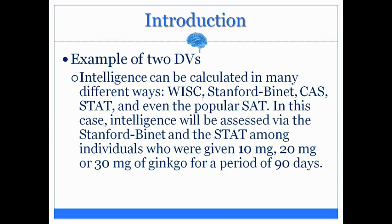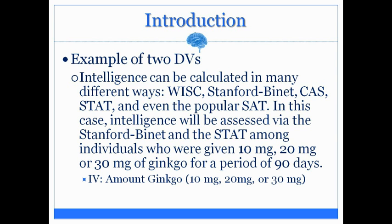The independent variable here is what the researchers are manipulating — the amount of ginkgo provided. Some individuals receive 10 milligrams, some receive 20, some receive 30. So the IV is the amount of ginkgo provided, and it has 3 levels: 10 milligrams, 20 milligrams, and 30 milligrams.